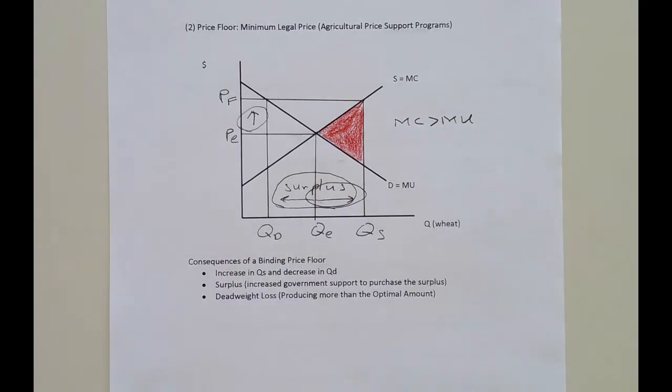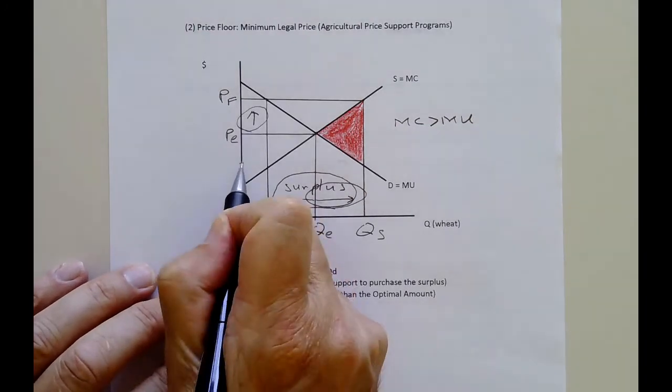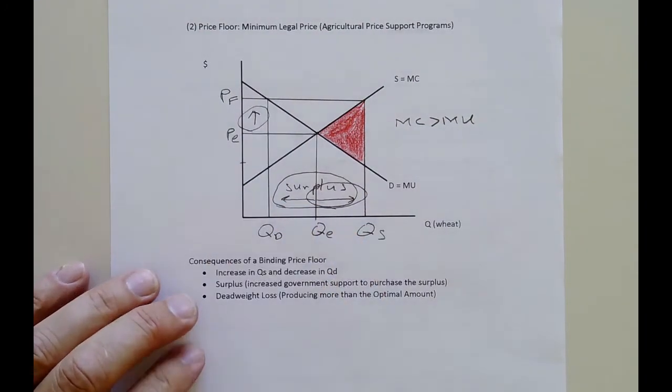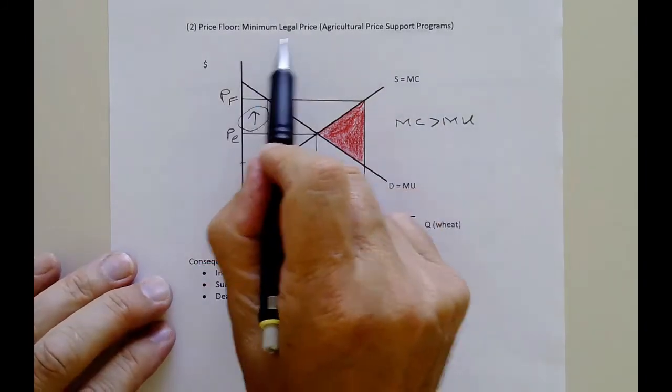Now before I leave this lecture, I want to go back and talk about binding. So here, if I ask you on the exam, what would happen if the price floor was put down here? You would say nothing. Because if it's below equilibrium, it is non-binding. Why? Because the definition is, it's a minimum legal price.